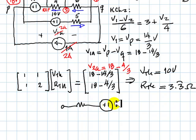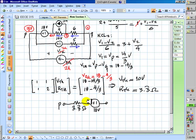With that polarity, it's a positive in the chosen direction for the assumed VTH. 10 volts, 3.3 ohms. Thank you very much.